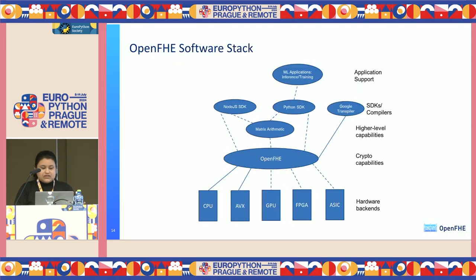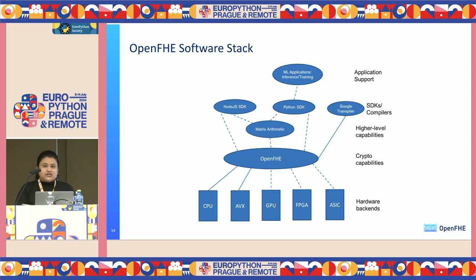The OpenFHE software stack: at the very bottom layer we have hardware backends. On top of that, crypto capabilities. On top of that, matrix arithmetic for different kinds of machine learning applications. Then the SDKs — Python SDK, Node.js, Rust. Google Transpiler is also a use case of OpenFHE. And on top of that, application support.